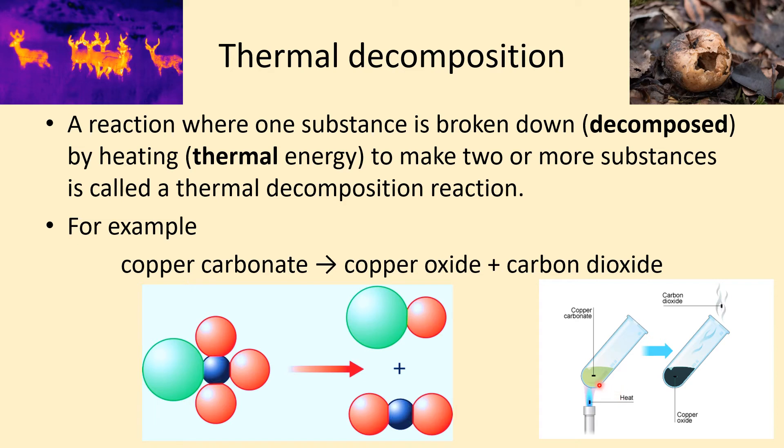Actually, in real life, it's darker than that. When you heat it up, it breaks down and forms copper oxide, which is black powder, and carbon dioxide gas. The carbon dioxide gas escapes through the end of the boiling tube.